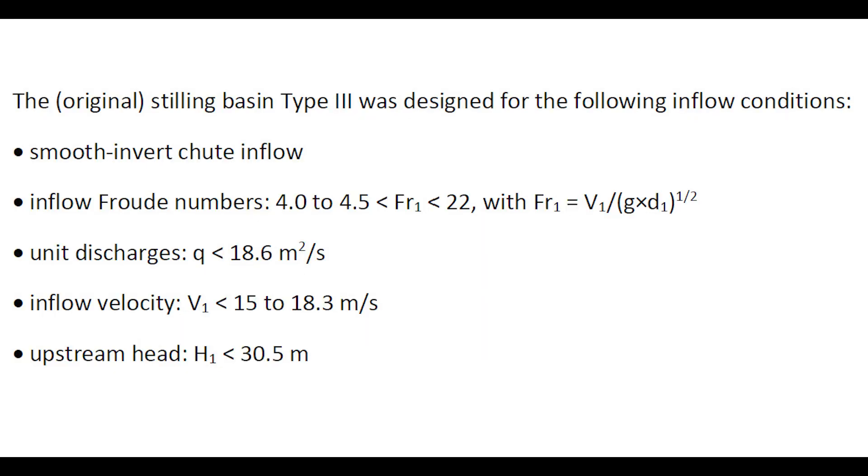The original Stilling Basin Type III was designed specifically for smooth inverted chute inflow, inflow Froude number greater than 4 to 4.5 and up to 22, and unit discharge less than 19 square meters per second with flow velocities less than 15 to 18 meters per second.